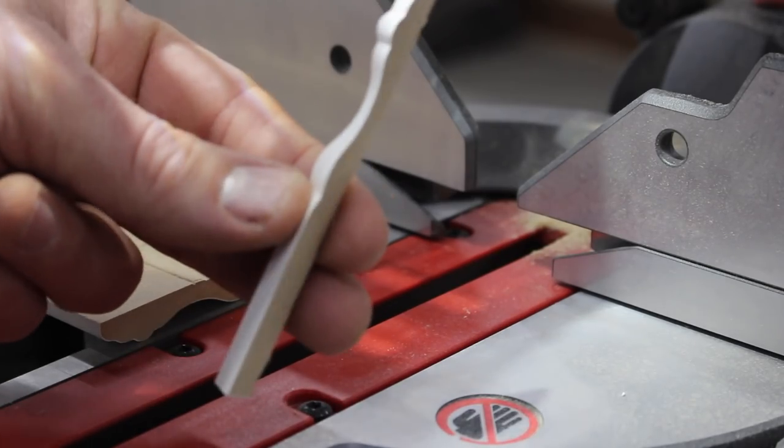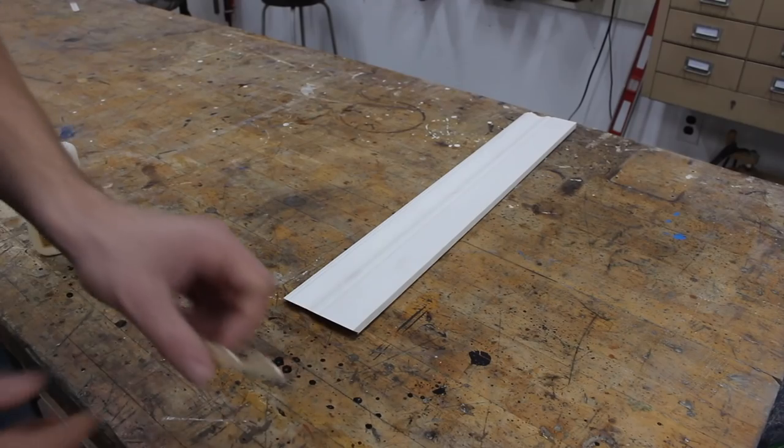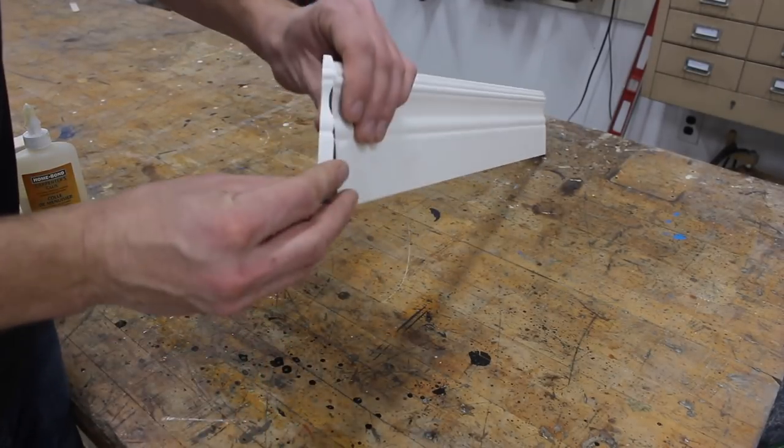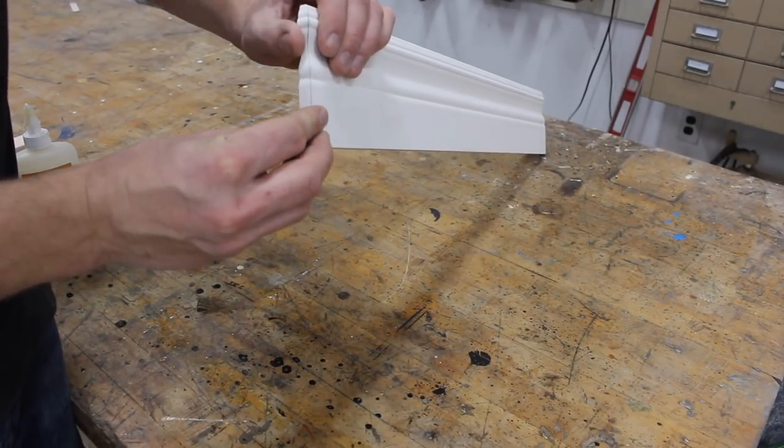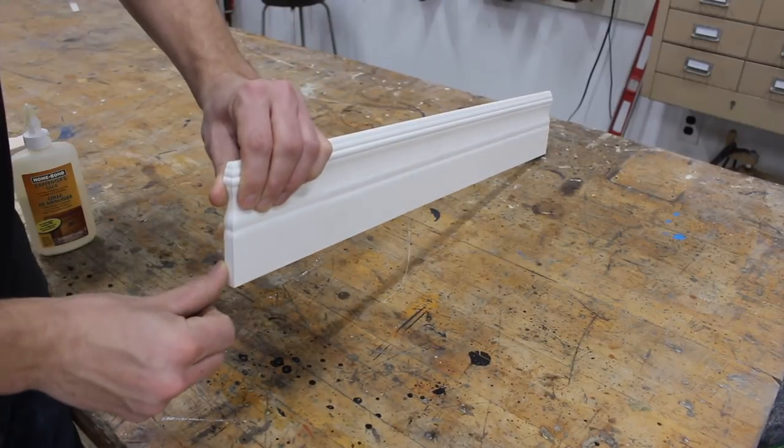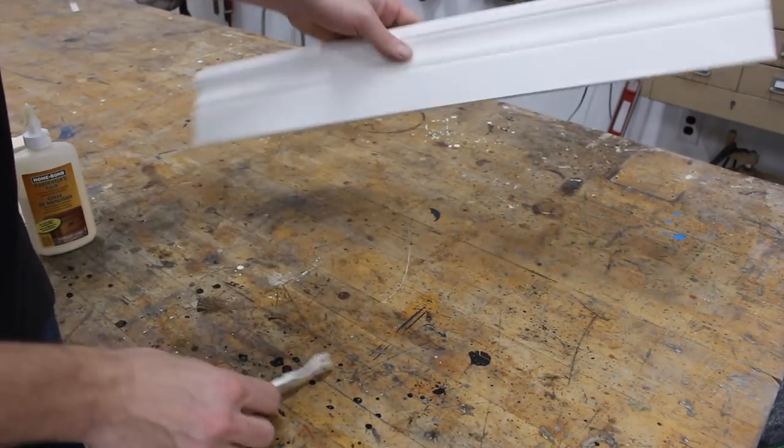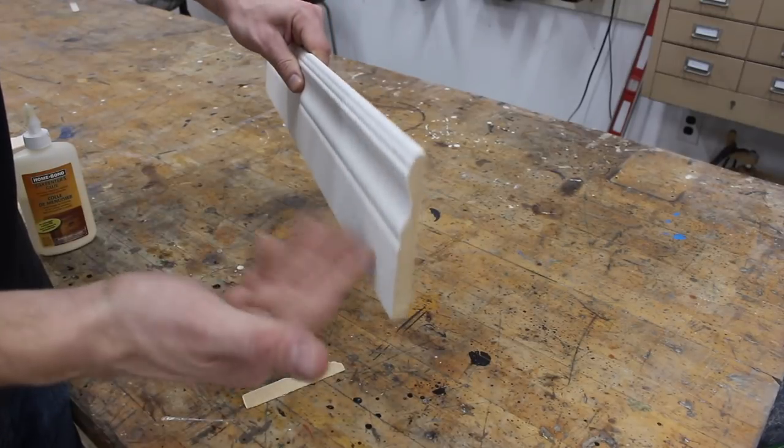And that there is your little return piece. Now that you have this little guy cut, all you have to do is glue it on the end of your baseboard so that it creates the same profile you have on the front. It looks better than cutting it off flush at a wall where it ends.